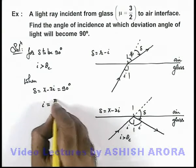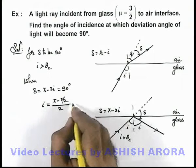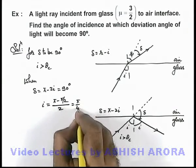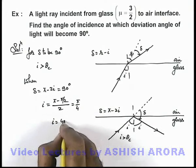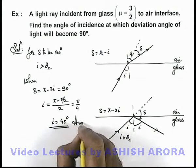This will be π minus π/2, divided by 2. 90 degrees I have written as π/2, so this will be π/4. That means the value of i should be 45 degrees for this to happen, and that will be the answer to this problem.